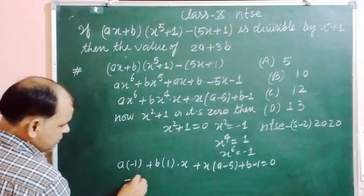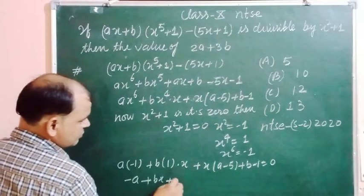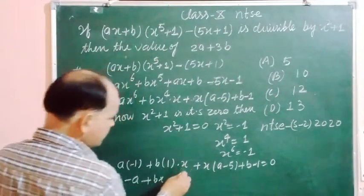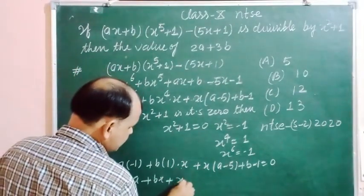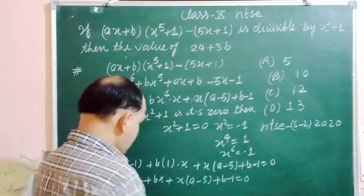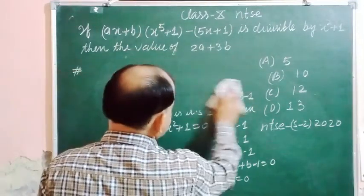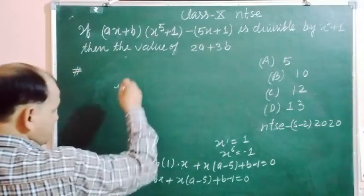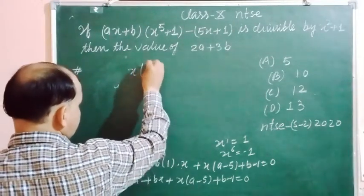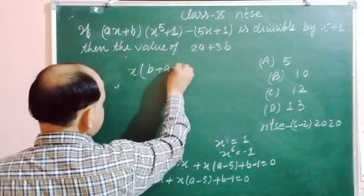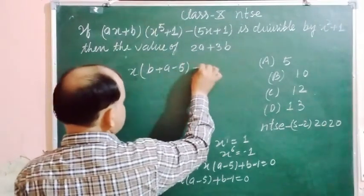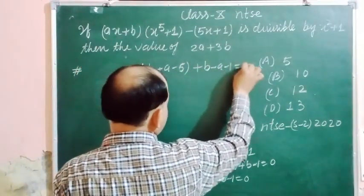Therefore this gives minus A plus B, plus x times (A minus 5), plus (B minus 1) equals zero. Now rearranging, we take x common from the variable terms, giving x(B + A minus 5), and the constant part is (B minus A minus 1) equals zero.